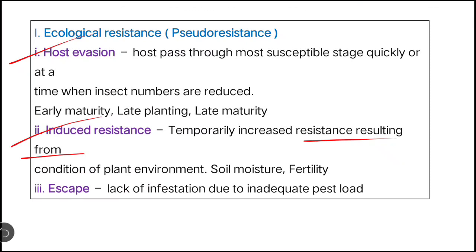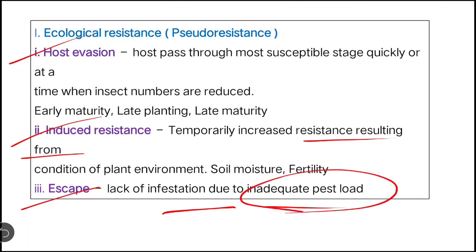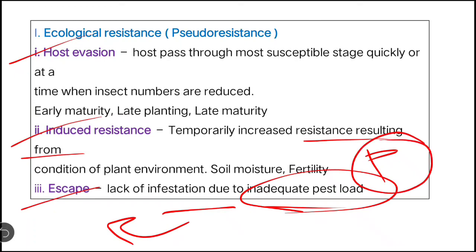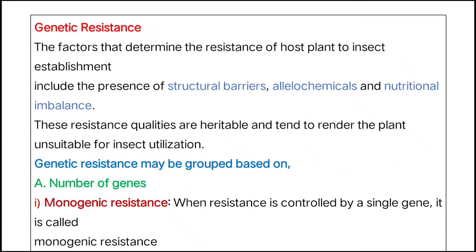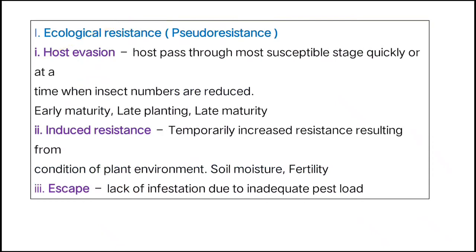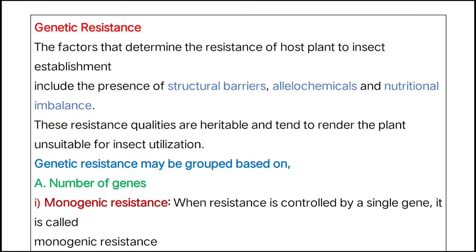Next is escape: the lack of infestation due to inadequate pest load. Suppose a pest population arrives but their numbers are too low to cause infestation — then your plant can escape damage. Genetic resistance will be discussed in the next class.